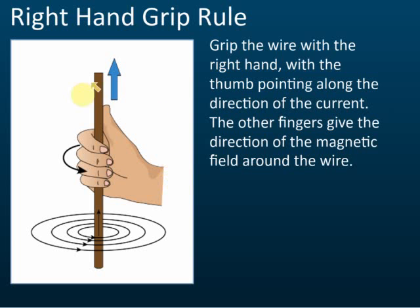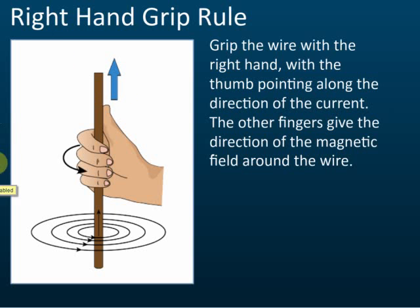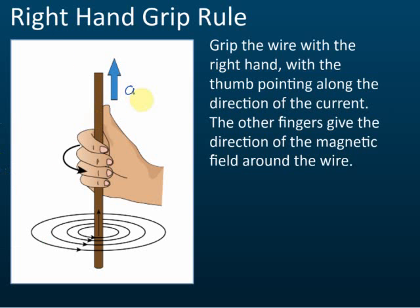For the right-hand grip rule, imagine this is a wire. You use your right hand to grip the wire in this way, and the thumb shows the direction of the current.